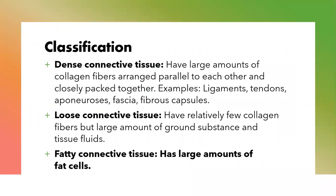How do you classify connective tissues? They can be classified as dense connective tissue, loose connective tissue, or fatty connective tissue. The dense connective tissue has large amounts of collagen fibers arranged parallel to each other and they are closely packed. Examples are the ligaments, the tendons, aponeurosis, fascia, and the fibrous capsules.